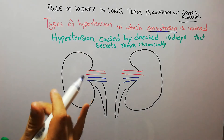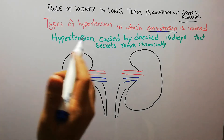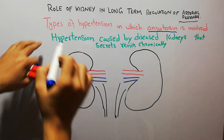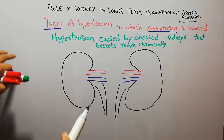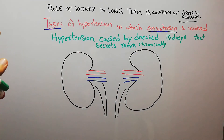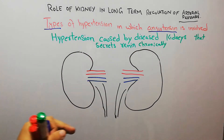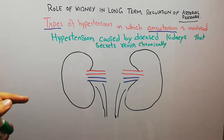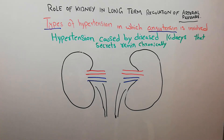We have already discussed some types of hypertension due to angiotensin, including renin-secreting tumor, one-kidney gold blood hypertension, and two-kidney gold blood hypertension in the past few lectures.